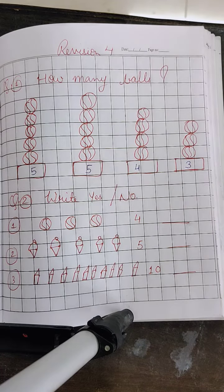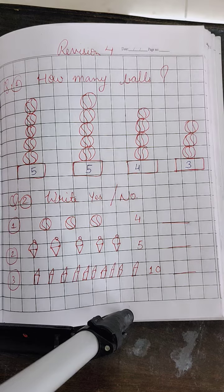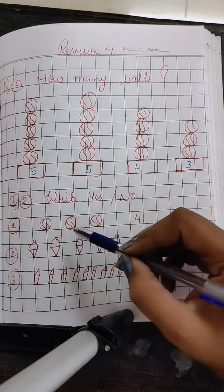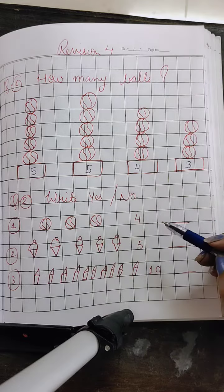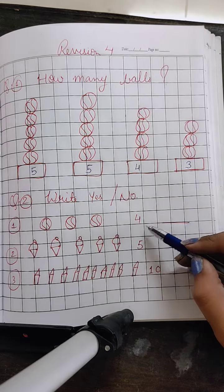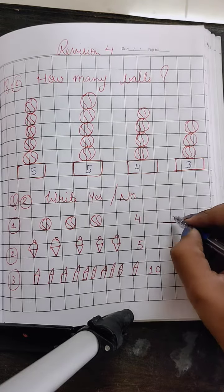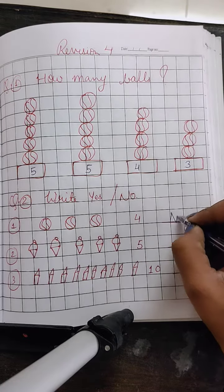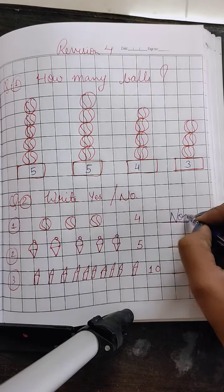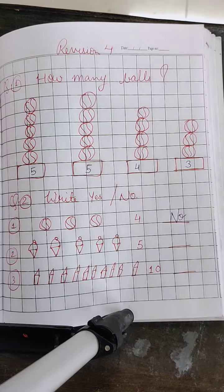Next, question number 2 is: write yes or no. We have to write yes or no. 1, 2, 3. Here we have to write 4. This means this is wrong. So we will write NO.